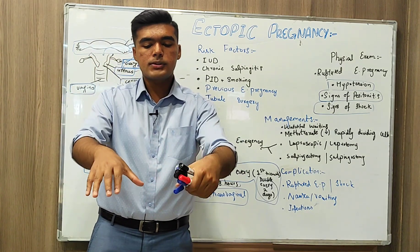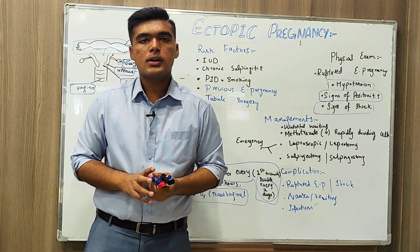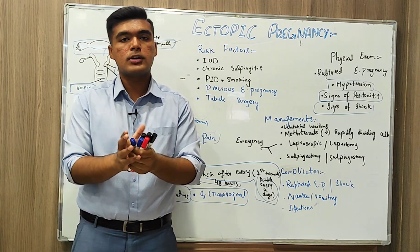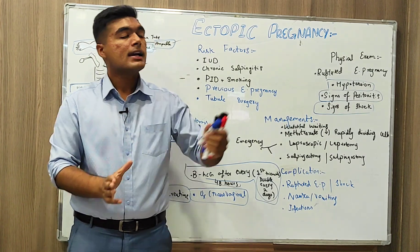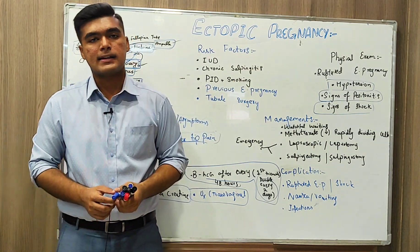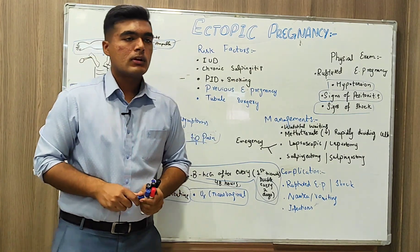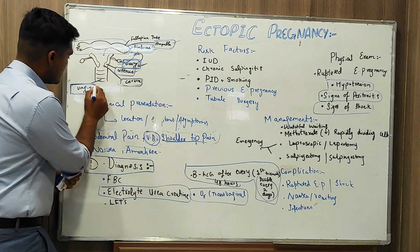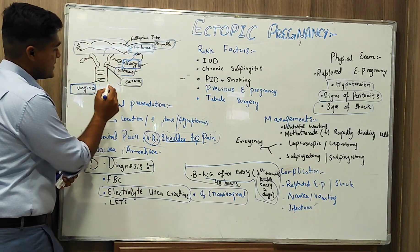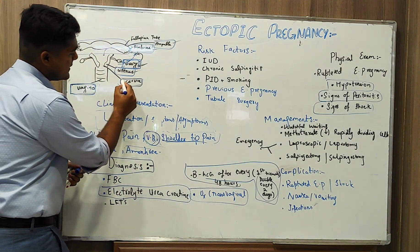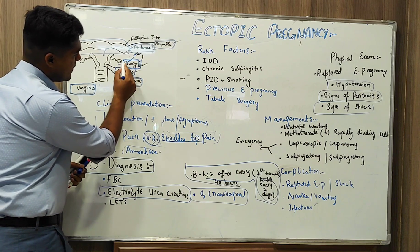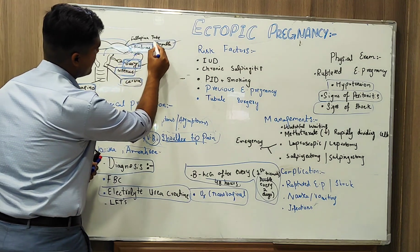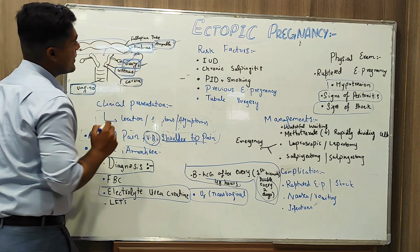Before going into the roots of this topic, we have to know a few structural points of the female reproductive tract and how ectopic pregnancy occurs. For that, I'll draw a few structures. Here we have the vagina, cervix, uterus, ovary, fallopian tube, and its parts — the fimbria and ampulla.